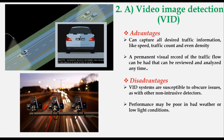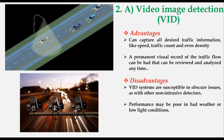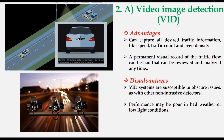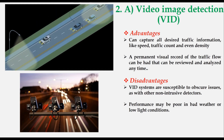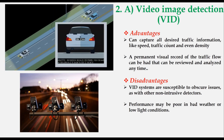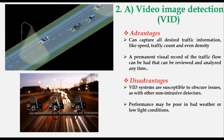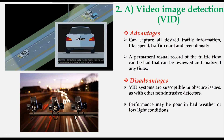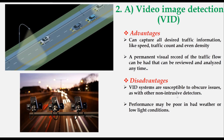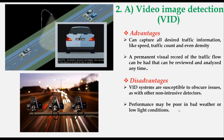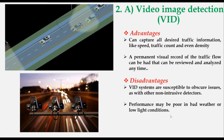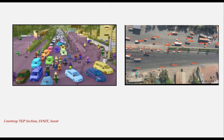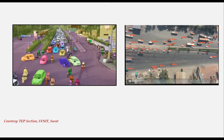In the category of non-intrusive systems, the first is video image detection system. Traffic parameters are collected by frame-by-frame analysis of video images captured by roadside cameras. The advantage is that it can capture all desired traffic information like speed, traffic count, and even density, and a permanent visual record can be maintained which can be reviewed and analyzed separately at any time. The disadvantage is that these systems are susceptible to obstruction issues, and performance may be poor in bad weather or low light conditions. However, when transmitted through software, they can provide the category of the vehicle as well as speed simultaneously.